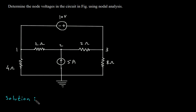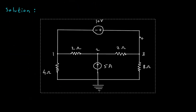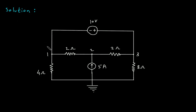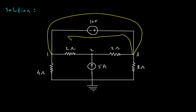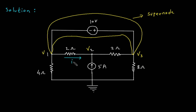First we will redraw the circuit. As we can see, this is a supernode. Let's say the voltage across node 1 is V1, this is V2, and this is V3. Now we will assume the direction of current. Let's say this is current I1, this is current I2, this is current I3, and this is current I4. So this node is 0V.